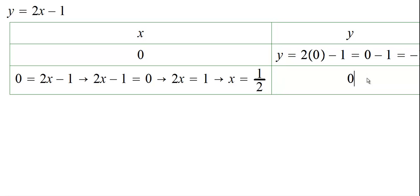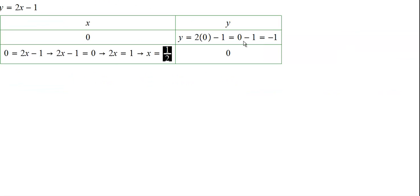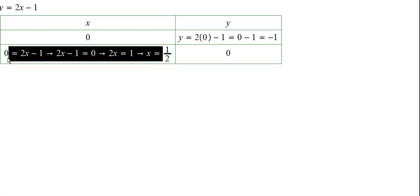When y is 0, my x value is 1 over 2. So the answer will be, notice this: when x is 0, y is negative 1, and when y is 0, x is 1 half.